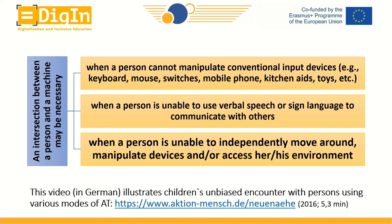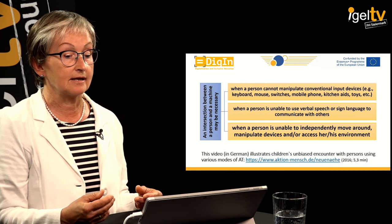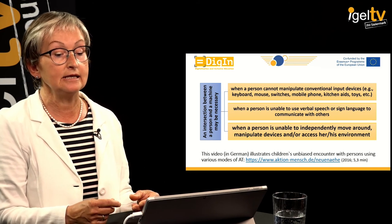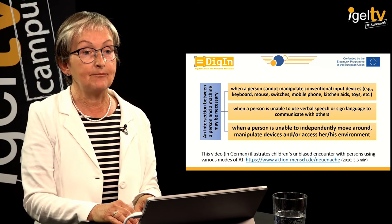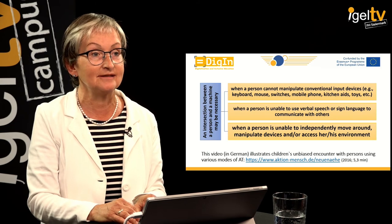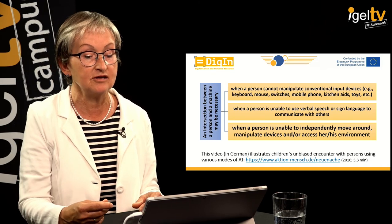An intersection between a person and a machine may be necessary, and there are three possibilities when this is the case: either when a person cannot manipulate conventional input devices such as a keyboard, mouse, switches, mobile phones, remote controls, kitchen aids, or toys; when a person is unable to use verbal speech or sign language to communicate with others; or when a person is unable to independently move around, manipulate devices, and access their environment. We invite you to watch a linked video to explore this in greater depth — within this presentation we do not have time to show the videos, but you have the link.